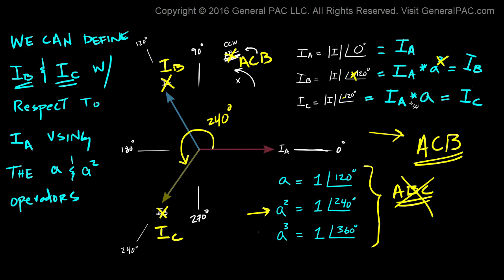So for an ABC system, the operator is that. But this won't work for an ACB system. What we have to do is we have to put a superscript 2 there. Now this totally makes sense. For an ACB phase sequence, this is how we have to define IB and IC with respect to IA using the A and A superscript 2 operators.